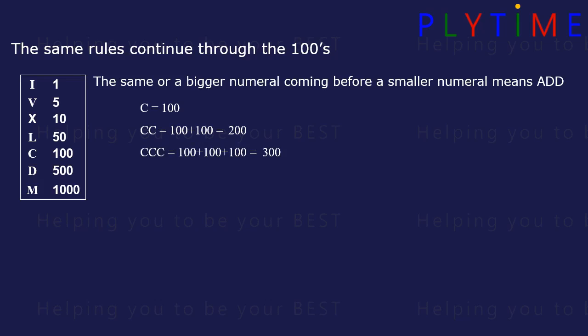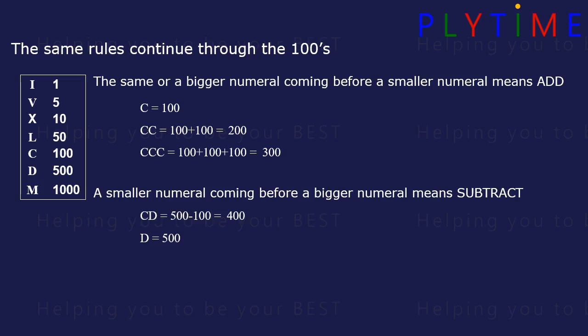A smaller numeral coming before a bigger numeral means subtract. CD is 100 before the 500, which is 400. D alone is 500. DC is 500 plus 100, which is 600. DCC is 700. DCCC is 800.